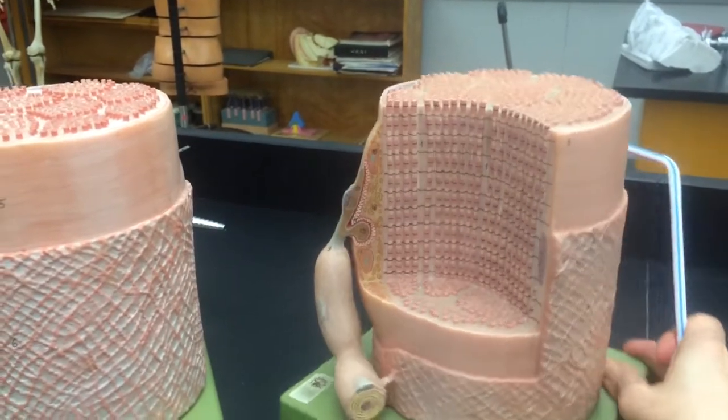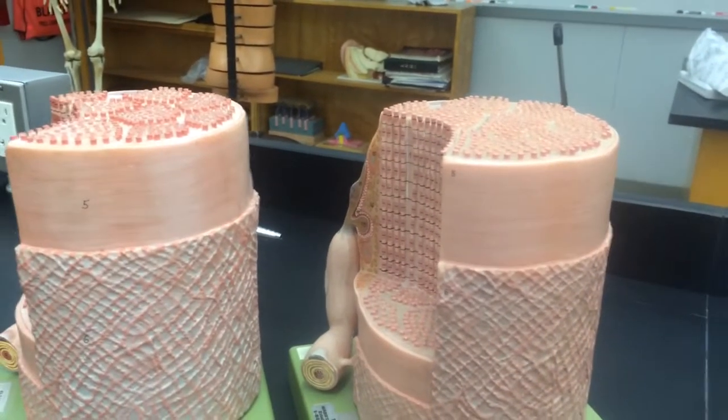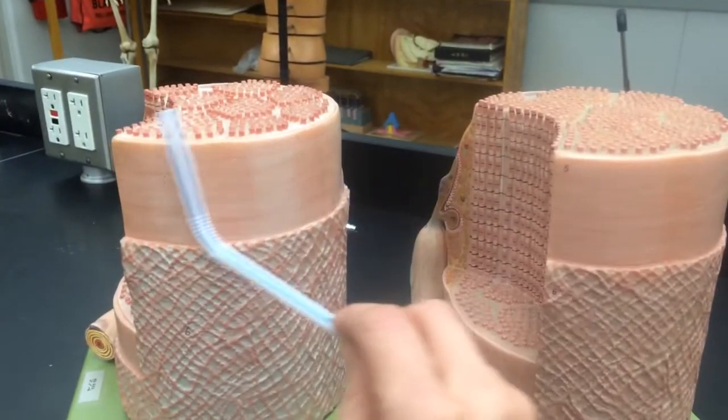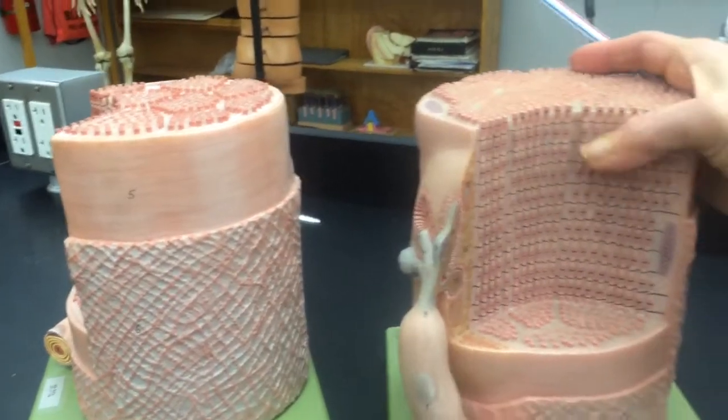The sarcolemma is actually the plasma membrane of the muscle fiber. All of this is the sarcolemma seen here as well.